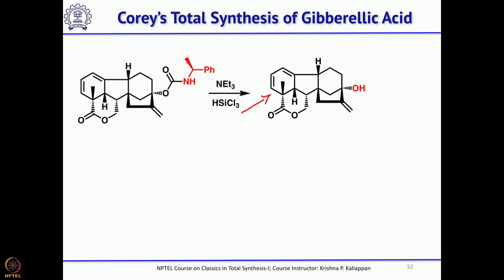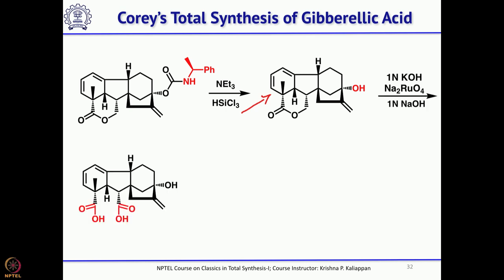What you need to do next is oxidize the CH2O to COOH and also hydrolyze the ester. Both were done in one step by treating with potassium hydroxide and sodium ruthenate. This cleaved and gave a dicarboxylic acid.